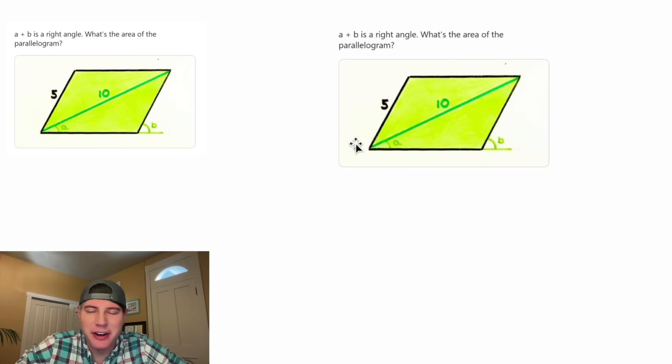Hey guys, this looks like a fun one. We're given a parallelogram and the fact that this angle A plus this angle B is equal to 90 degrees. We're also given this side is equal to 5 and the diagonal is equal to 10.